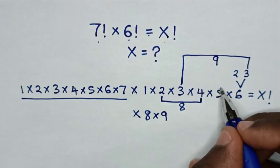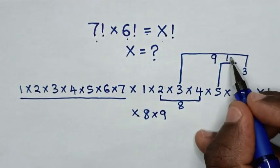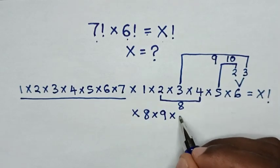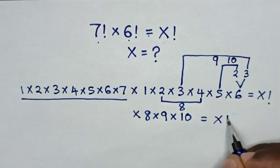Then, to get 10 is multiplication of 5 times 2, which is 10. Then, here to be times 10, which is equal to x factorial.